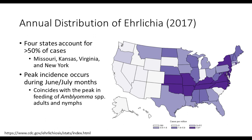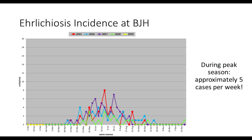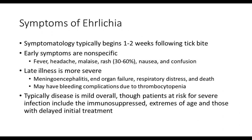Looking at the annual distribution of Ehrlichia based on 2017 data, four states account for approximately greater than 50% of all cases: Missouri, Kansas, Virginia, and New York. Peak incidence occurs during June and July months, coinciding with the peak feeding of Amblyoma species. Here at Barnes-Jewish Hospital, we have seasonal peaks primarily in June and July, and during those peaks we can see approximately five cases per week.